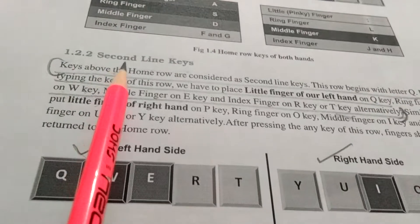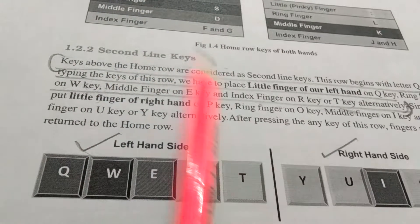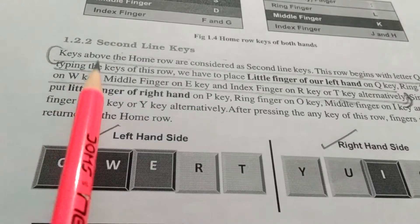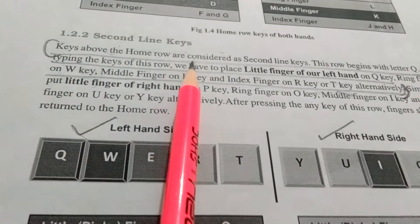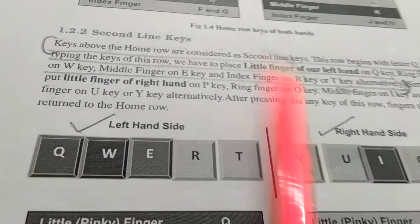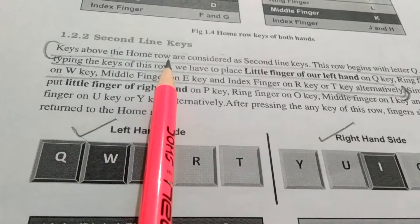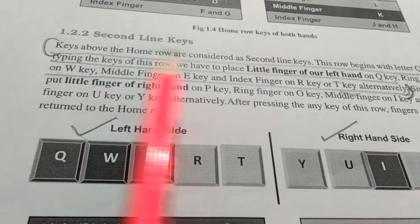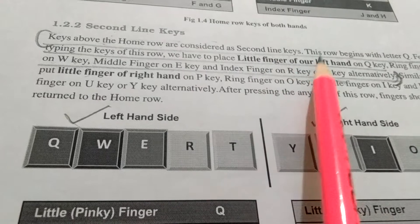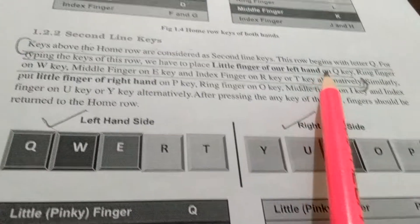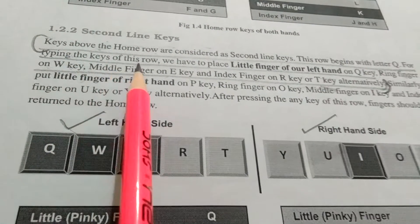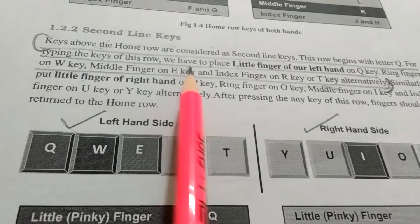The next topic is second line keys. The keys above the home row are considered as second line keys. Above the home row, this row begins with the Q. For typing the keys of this row,